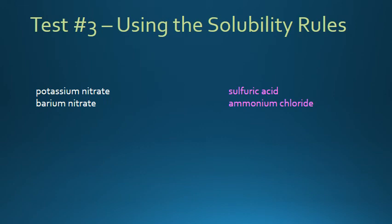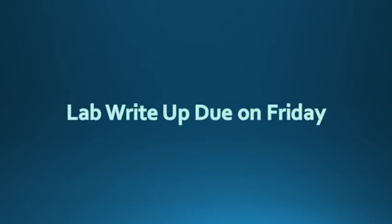Using what you already know and your solubility rules, you can now figure out which is potassium nitrate, which is barium nitrate. And you can now figure out which acid is sulfuric acid and which acid is ammonium chloride. Your lab write-up is due on Friday.